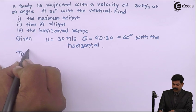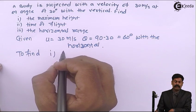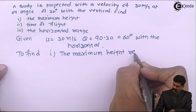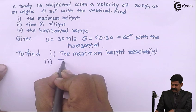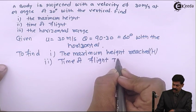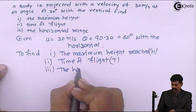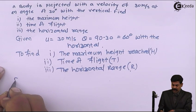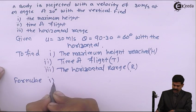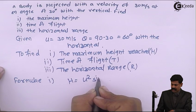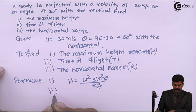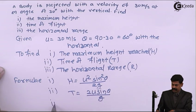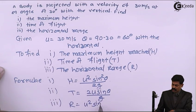To find: maximum height reached, time of flight, and horizontal range. Formulas we will use — first: H equals u square sine square theta by 2g. Second: time of flight equals 2u sine theta by g. Third: range equals u square sine 2 theta by g.